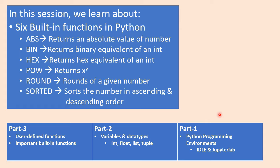For today's session I'll be using JupyterLab. These are the functions we're going to discuss: ABS returns the absolute value or magnitude of a number; bin returns the binary equivalent of an integer; hex returns the hex equivalent of an integer; pow returns x to the power y, requiring two parameters; round rounds a number to a specified number of decimal places; and sorted sorts a list of objects in ascending or descending order.